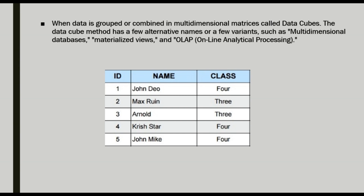In a normal table it looks like a simple 2D structure — for example, columns ID, name, and class — where each ID has a name and a class value. This is a two-dimensional concept; that is our normal database concept. When data is grouped or combined in multi-dimensional matrices, then it is called a data cube. We add more dimensions and view the data as a data cube, and multi-dimensional models follow this data cube approach.